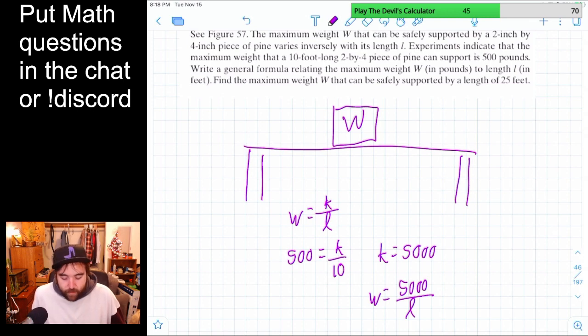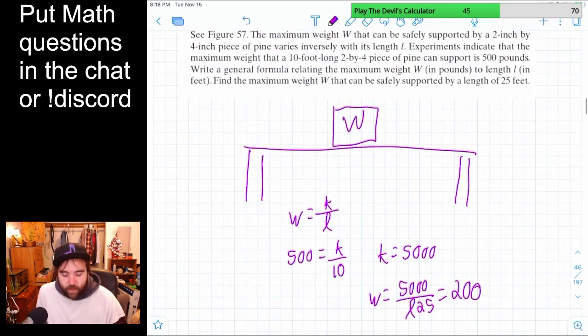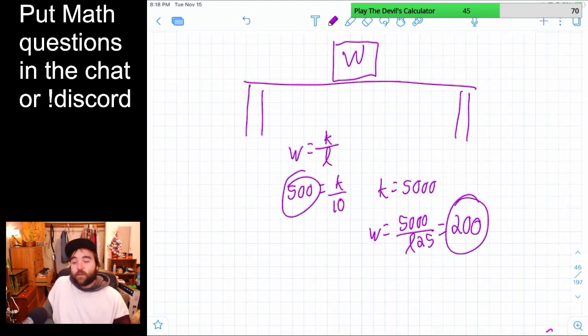Now we want to find the maximum weight when it's a length of 25. So that just means our length is 25. It's just 50, or it's 5,000 divided by 25, which is like 50 divided by 25, which is 2. So the answer is 200. And so that makes sense. It got longer. It went from supporting 500 pounds to only supporting 200 pounds.